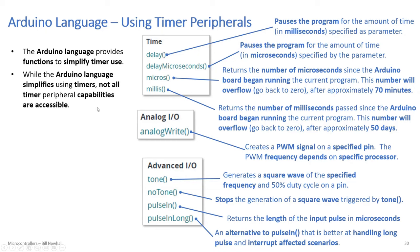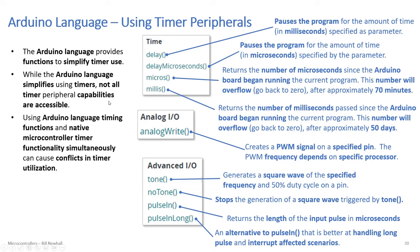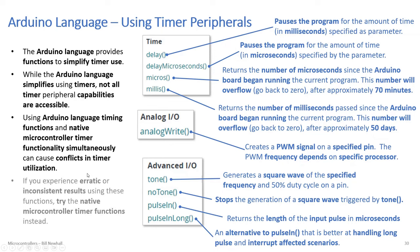While the Arduino language simplifies timer use, not all capabilities are accessible. For example, you can't easily maintain phase between multiple PWM signals. The native microcontroller timer registers are accessible, but they can conflict with Arduino functions — if you use analogWrite() to set up PWM and then directly modify the control registers, you'll get conflicts. If you see erratic results, try using the native microcontroller timer functions instead.